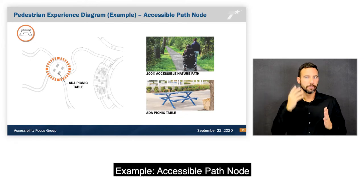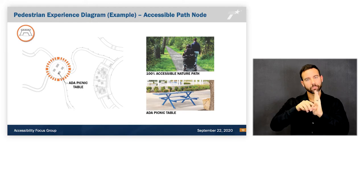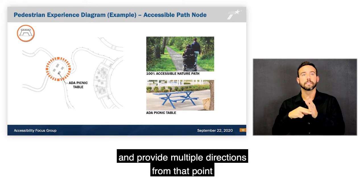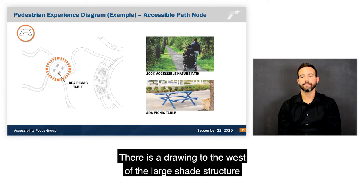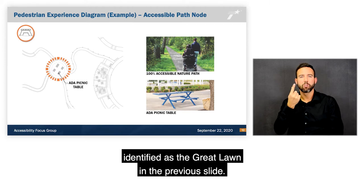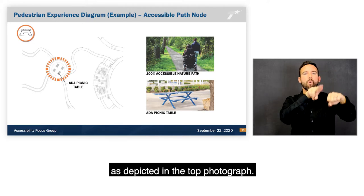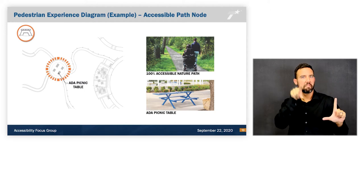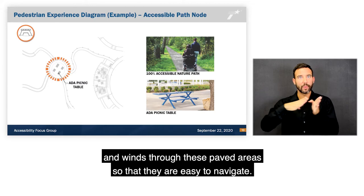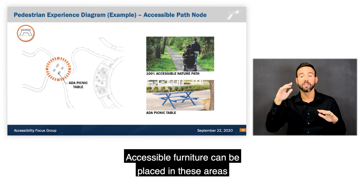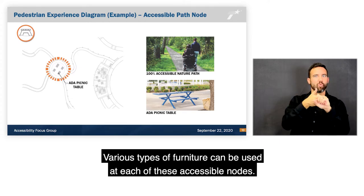The Pedestrian Experience Diagram for accessible path nodes highlights areas where trails come together, providing multiple directions or serving as destination points. There is a drawing to the west of the large shade structure identified as the Great Lawn where trails merge into a more natural formalized environment. This nature path is about 100% accessible, winding through paved areas easy to navigate. Accessible furniture can be placed at these nodes where a person can pull up and join a group at a table, with various types of furniture available at each node.